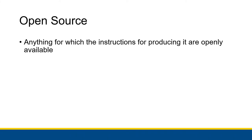When I talk about open source, it refers to anything for which the instructions for producing it are openly available. This could mean a lot of things. There is open source hardware where people give you the schematics for producing the circuitry and obtaining the components. There are open source 3D printed parts where you can find freely available parts that you're able to 3D print on your own machine. It's a very general, broad term, but it has a lot of uses, specifically in software.